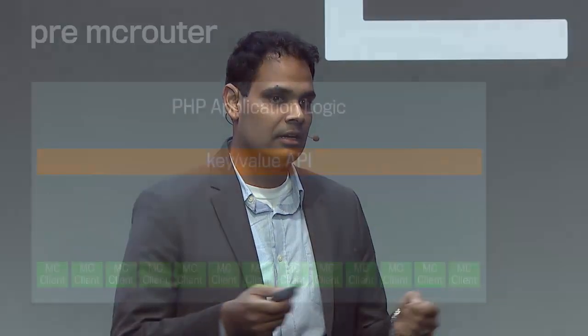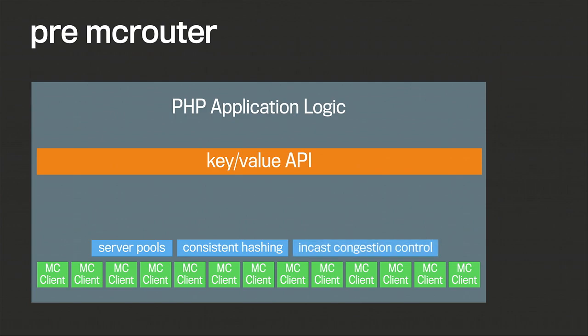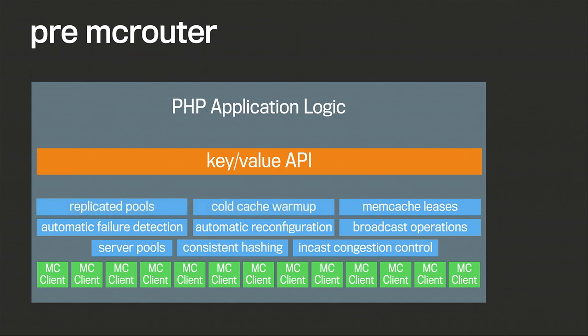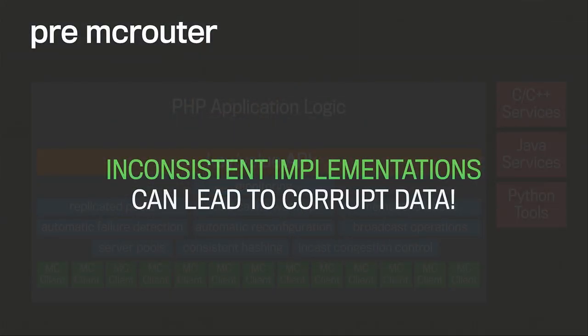What was this like before McRouter? We had our PHP application logic with a key-value API and various memcache clients. We started throwing in features like server pools, consistent hashing, and incast congestion control. Then even more features: automatic failure detection, automatic reconfiguration, broadcast operations. As the site continued to grow, we added replicated pools, cold cache warm-up, and memcache leases, plus more monitoring. This stack got bloated quickly. And there are other service types at Facebook — C/C++, Java, Python — that had to fend for themselves, and inconsistent implementations across them could lead to corrupt data.